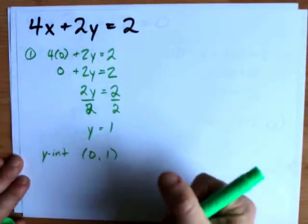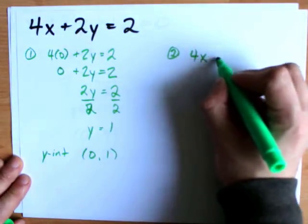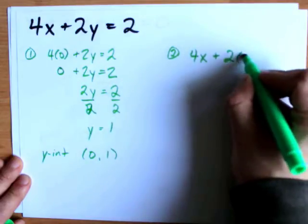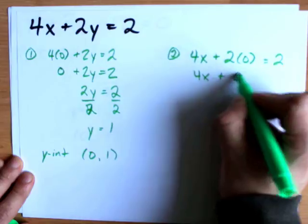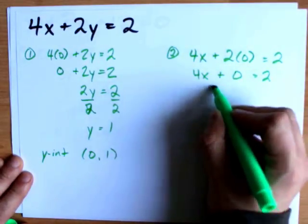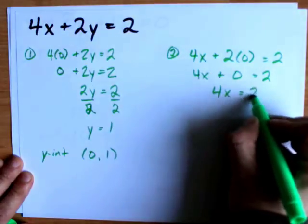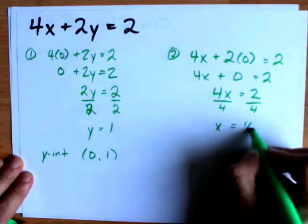Let's find the x-intercept together. We do that by plugging in 0 for y. 4x plus 2 times 0 equals 2. That's 4x plus 0. I multiply it again. 4x plus 0 is just 4x. And then I divide both sides by 4 because I'm isolating for x. x is 1/2.